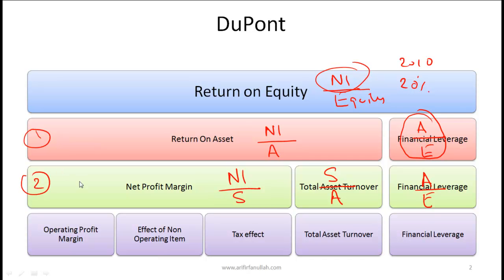This second-level decomposition breaks DuPont into net profit margin times asset turnover times financial leverage. Net profit margin tells us how much net income is relative to sales — think of this as profitability. Asset turnover refers to efficiency: how much sales we're generating from our assets. Financial leverage simply tells us how much leverage the company is using, which implies risk if ROE is driven primarily by this ratio.